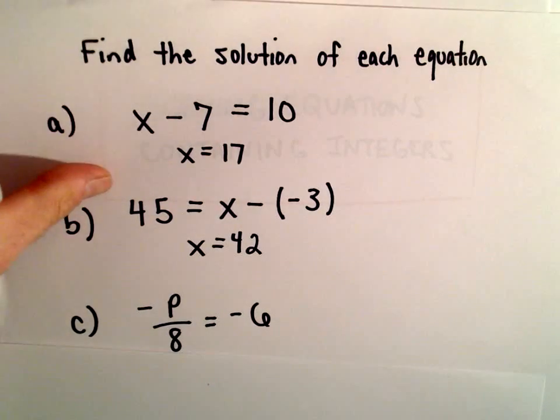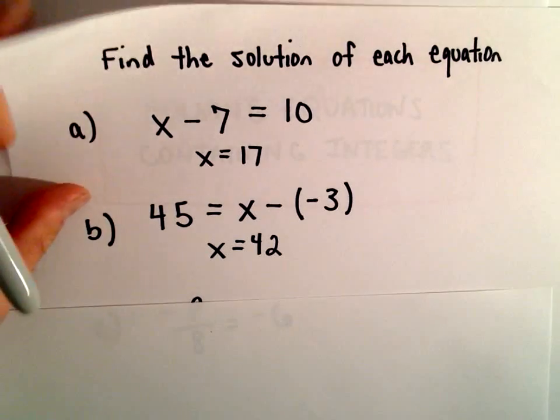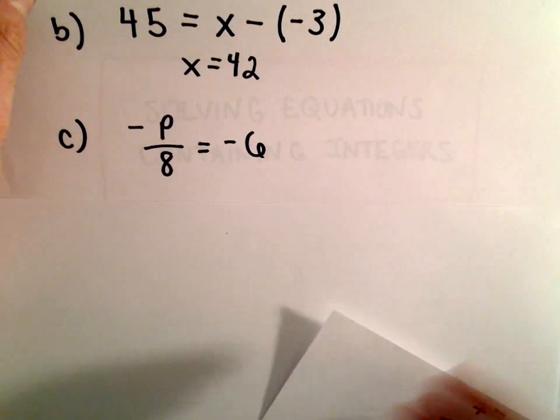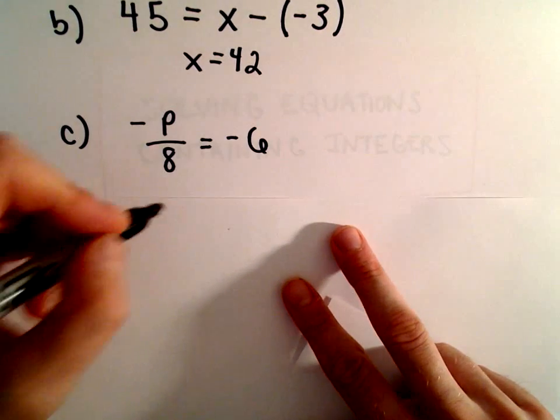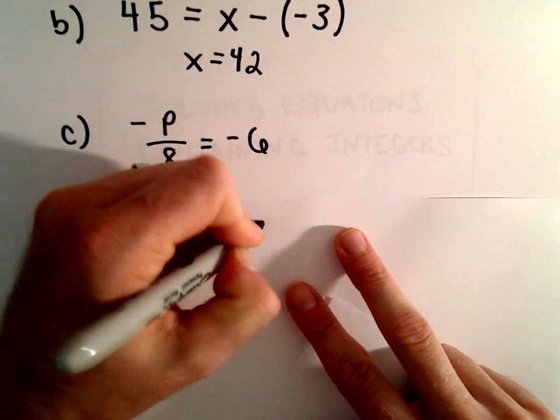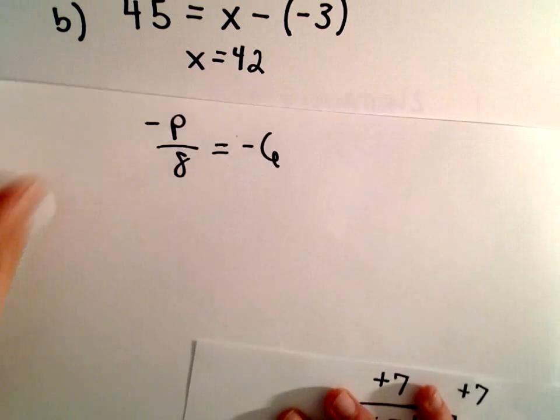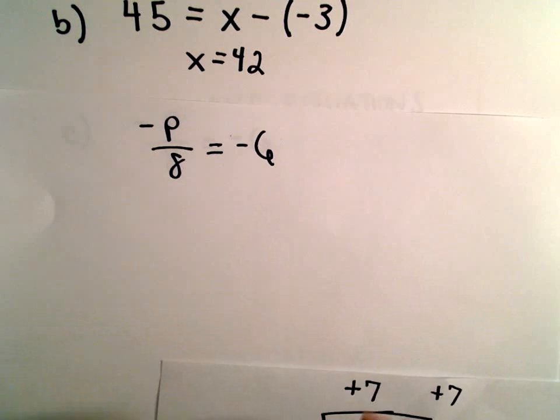Let's look at part C. We have negative P over 8 equals negative 6. I'm going to do this in two steps. You could do everything in one step, but I'll break it down.